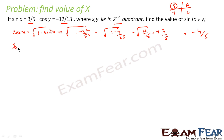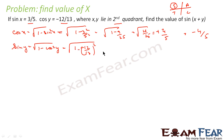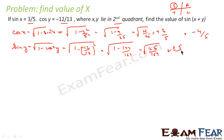Similarly, sin y is equal to root of 1 minus cos squared y. This becomes root of 1 minus (12/13) squared, which gives root of 1 minus 144 by 169, equal to root of 25 by 169, which is plus or minus 5 by 13. Since sin is positive in the second quadrant, we take plus 5 by 13. So now we have cos x, cos y, sin x, and sin y.